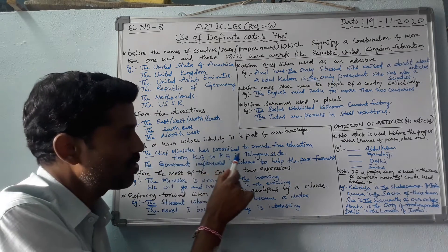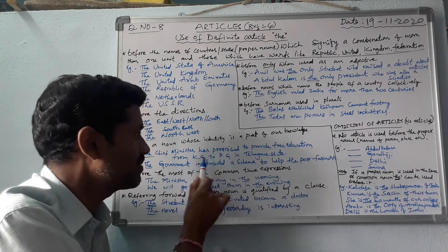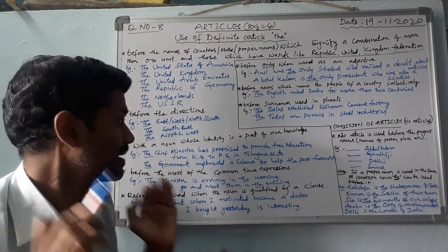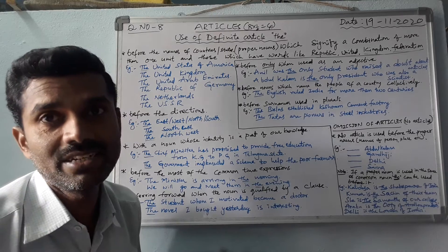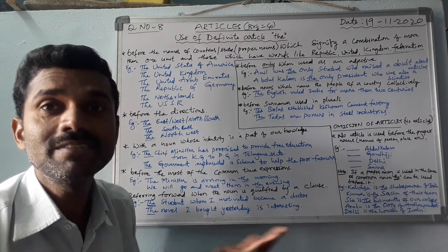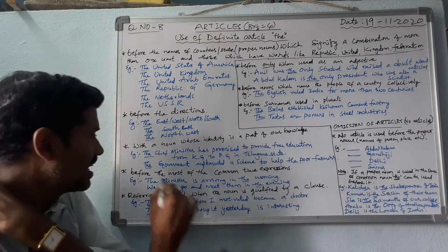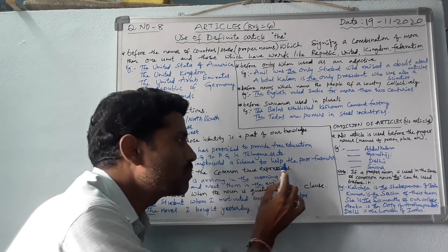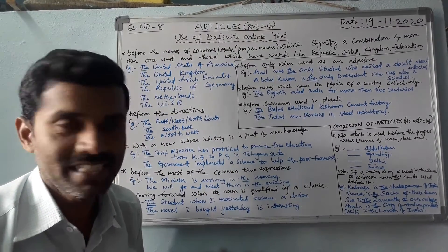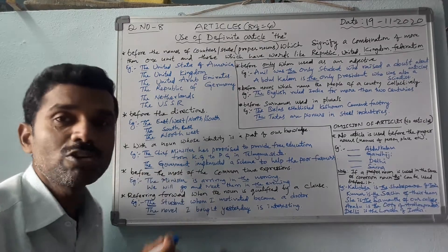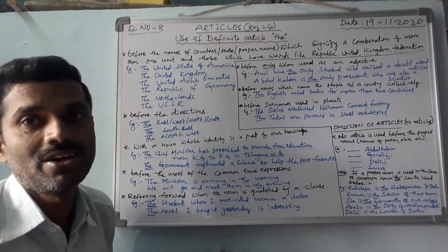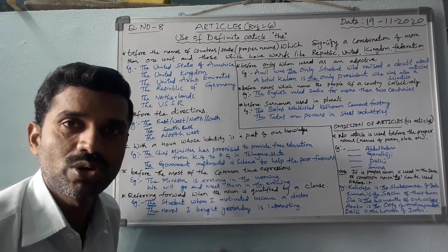For example: 'The chief minister has promised to provide free education from KG to PG in Telangana state.' Here, 'the chief minister' refers to the chief minister of our state, the Telangana chief minister. Again, 'The government implemented a scheme to help the poor farmers.' The government — which government? Our government, our Telangana government. So before these nouns we should use the definite article 'the'.